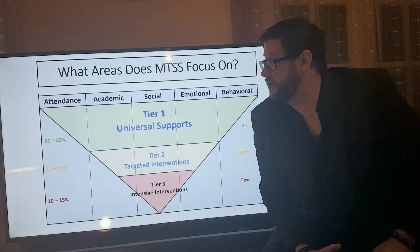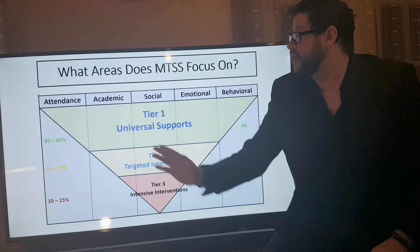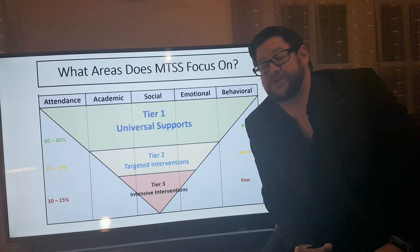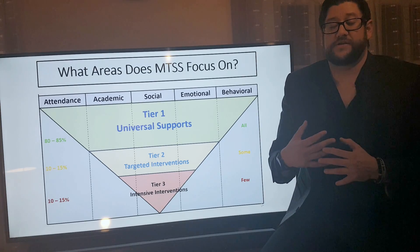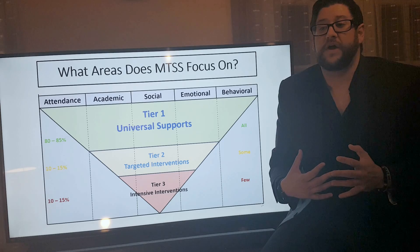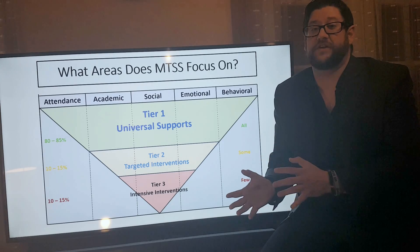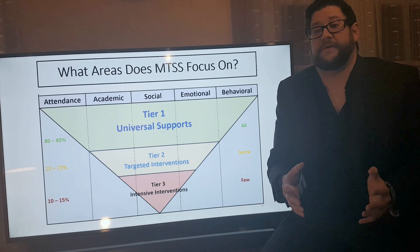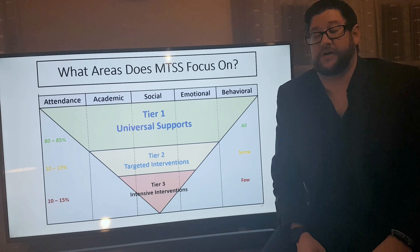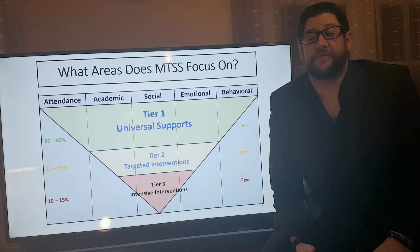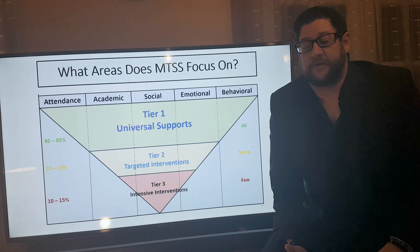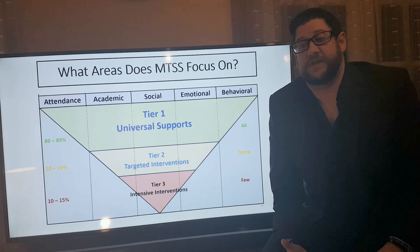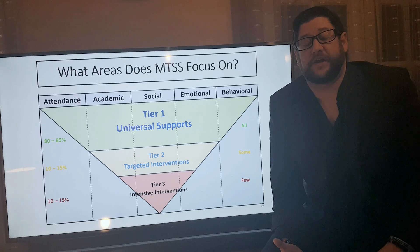Within multi-tiered systems of support, we have response to intervention, which is a service delivery model for providing evidence-based interventions to children and students, and providing a framework for teachers to follow in regards to what to do if a child is having difficulty and is struggling with their academics in reading, writing, or math. With response to intervention, we use progress monitoring, universal screening, and evidence-based interventions to help the child succeed and grow and learn in their academic environment.